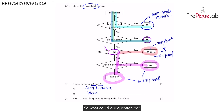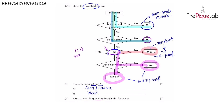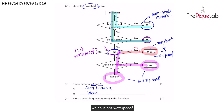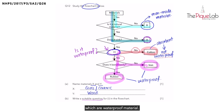So what could our question be? Could it be: is it waterproof? Let's check. When we answer no — cotton — which is not waterproof. And when we answer yes, it belongs to both iron and rubber, which are waterproof materials. So that answers part B: is it waterproof?